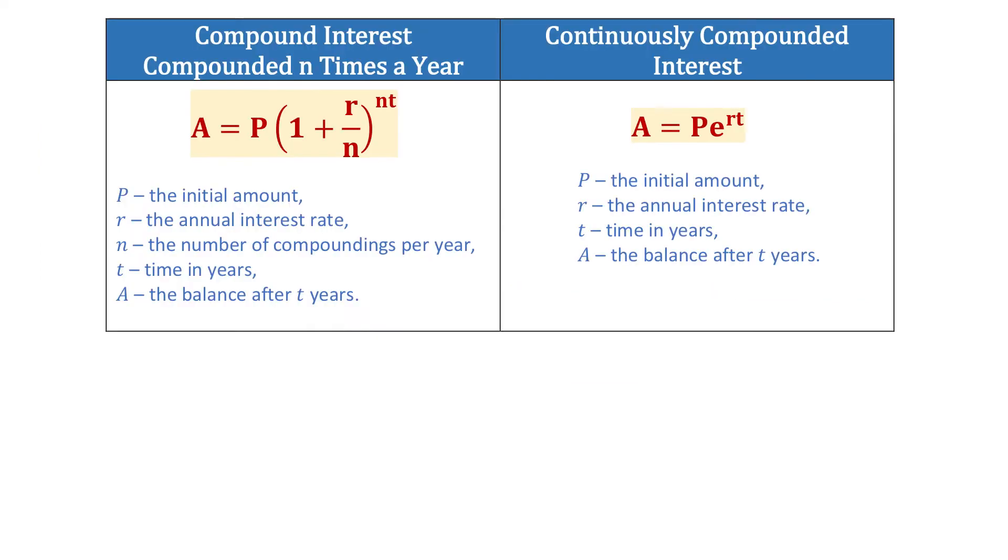Number e has a lot of applications in problems related to exponential growth and decay. For example, this number is used to calculate compound interest and to be more specific, it is used to calculate continuously compounded interest.